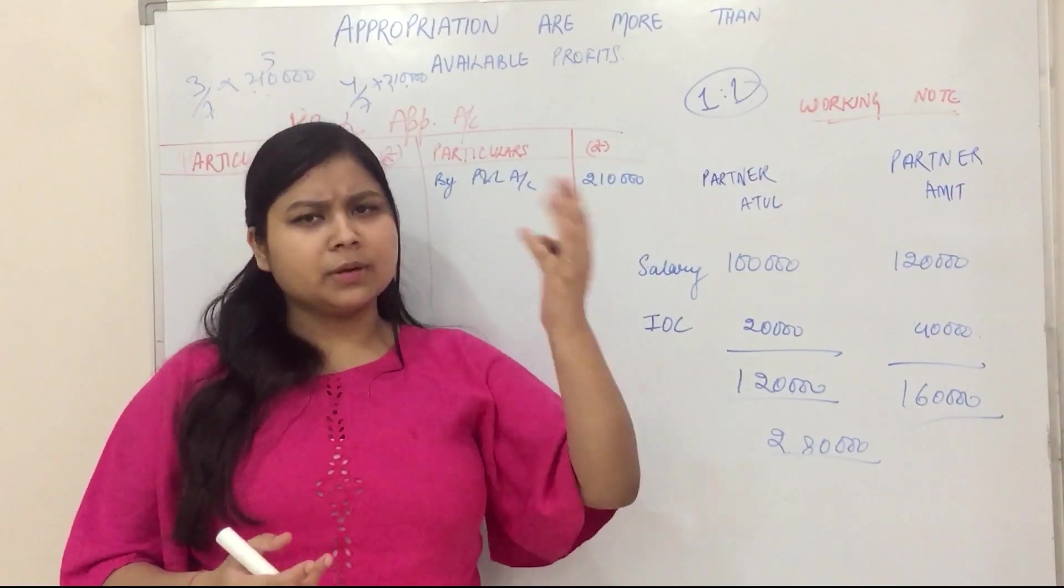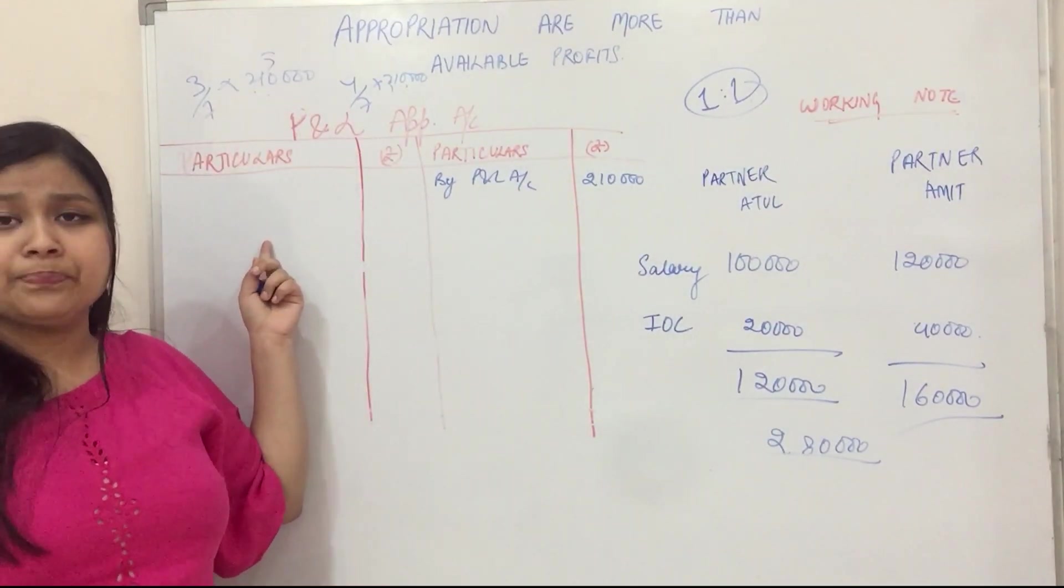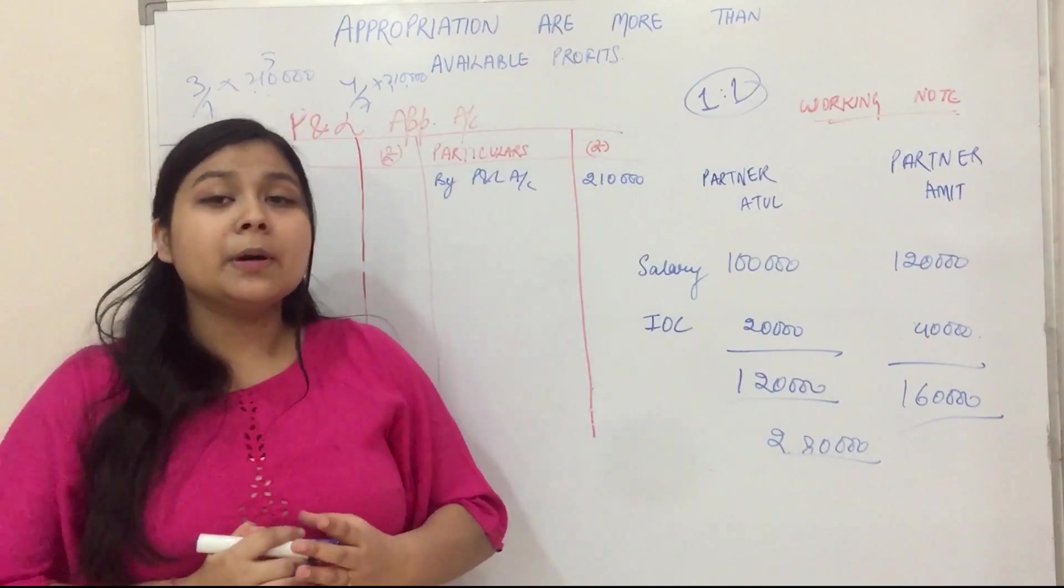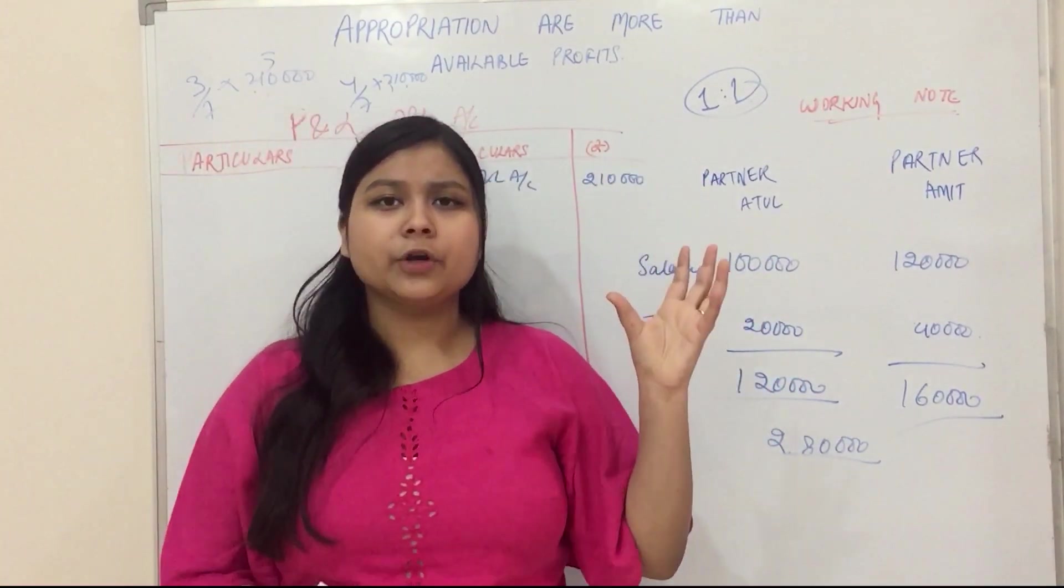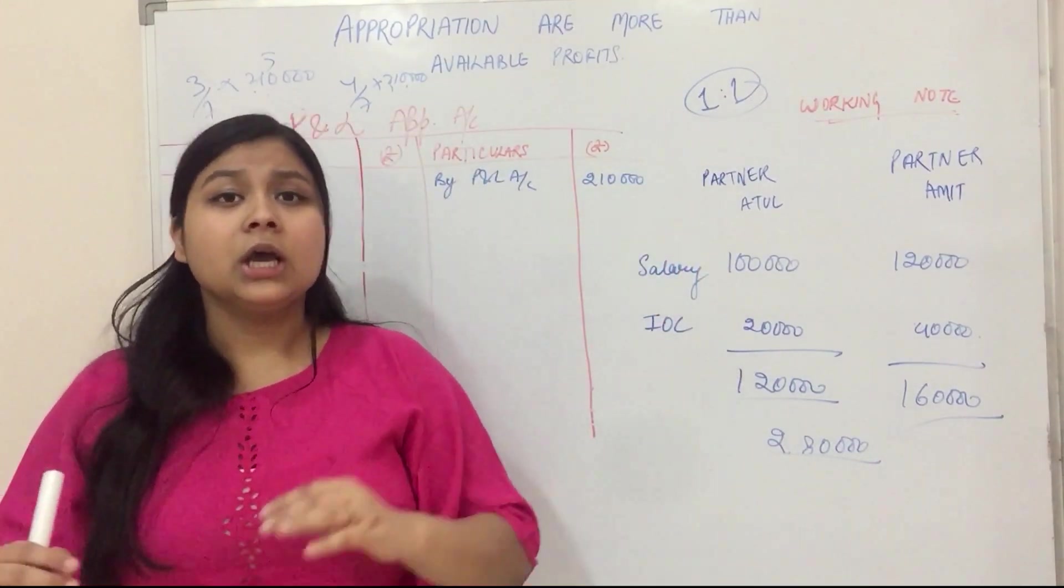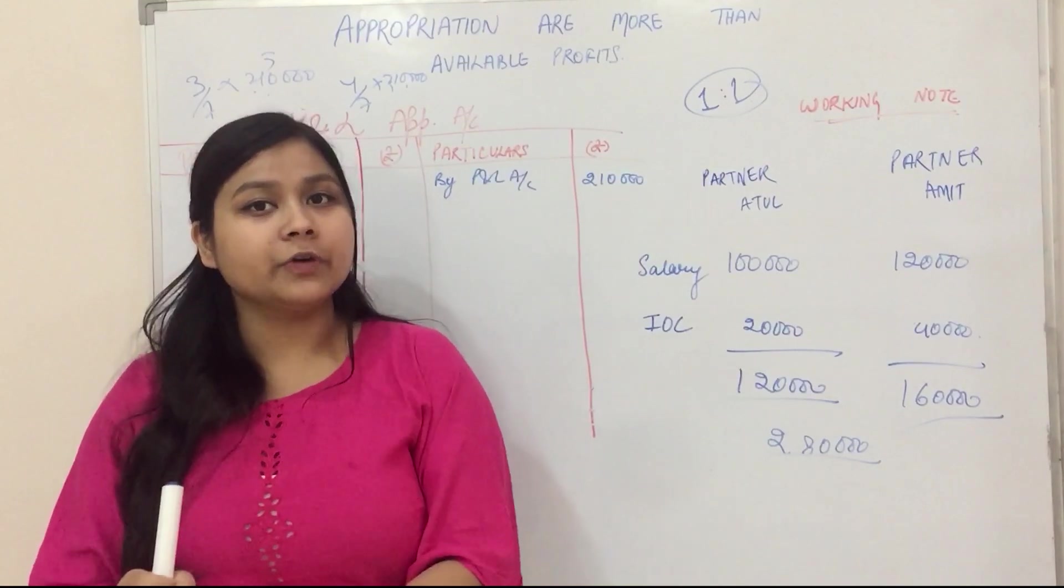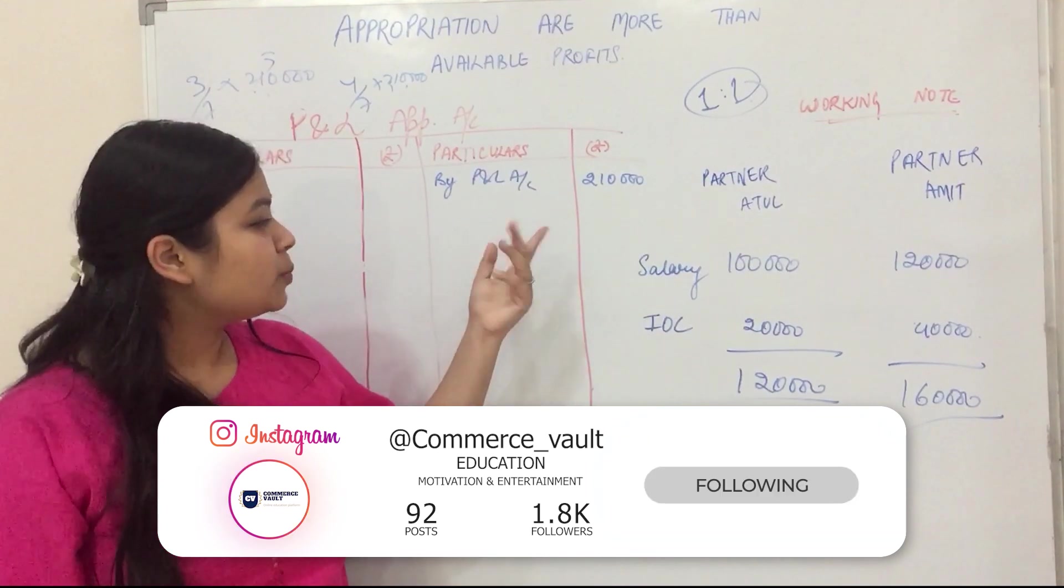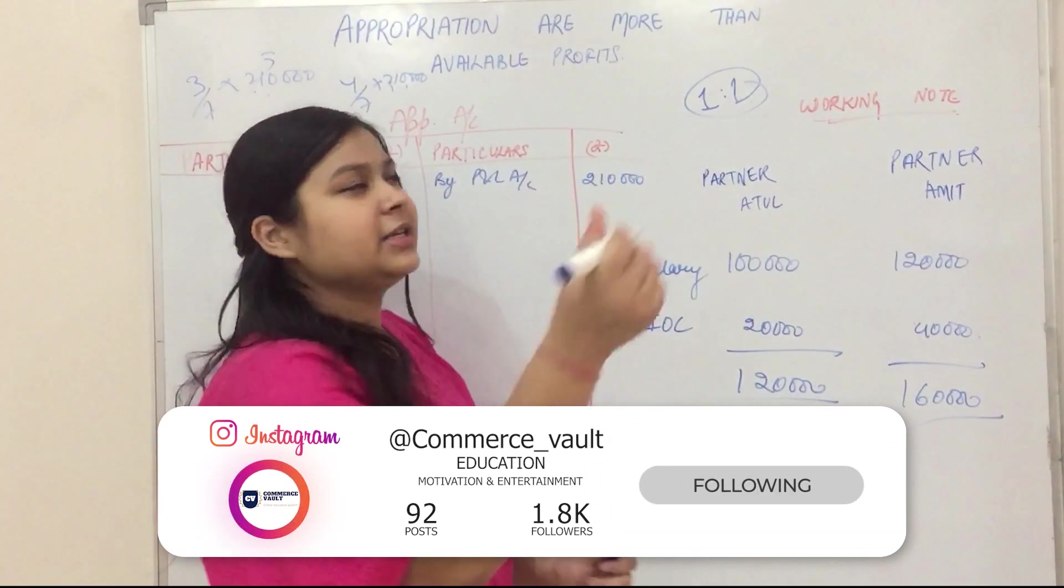Some people say we distribute it 1 to 1. We are not sharing profit. When we had a PNL account, we had two cases. When we have a profit, we do the appropriation. And what we have saved, that is our actual profit which we give partners in the profit-sharing ratio. If there is not enough profit, if it is less than that, we will give it in this ratio.